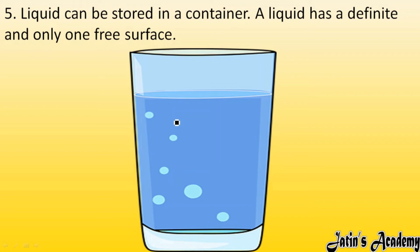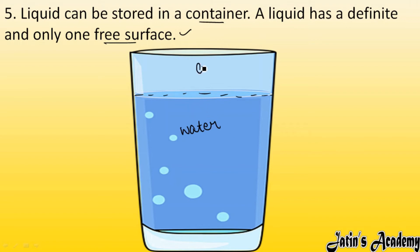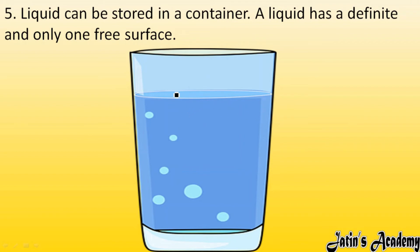A liquid can be stored in a container — whenever we want to store a liquid, we need some kind of container. A liquid also has a definite and only one free surface. For example, in a glass of water, the surface where two media — air above and water below — separate from each other is known as the free surface. As seen from the diagram, a liquid has only one such free surface.